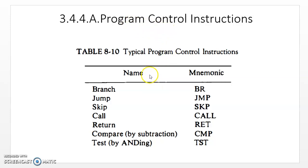What is a program control instruction? A program is executed line by line, instruction by instruction, and all these instructions are stored in memory sequentially, one location after another. While executing the instructions, each instruction is fetched from memory based on the address stored in the program counter. Usually, the program counter address is incremented by 1 — that is the general program execution sequence.